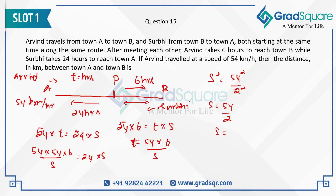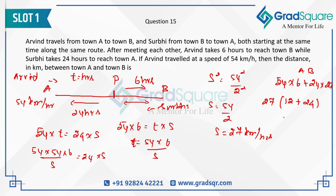The total distance AB equals the distance Arvind covered before meeting plus the distance he covered after meeting: (54 × 6) + (24 × 27). Factoring out 27: 27 × (12 + 24) = 27 × 36 = 972 km. So the total distance between town A and town B is 972 km.